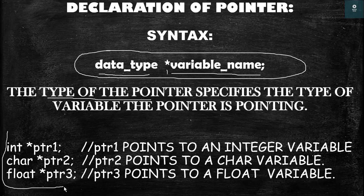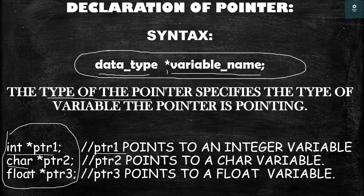We have three pointers here. The first one is integer star ptr1, which is an integer pointer — meaning that ptr1 will point to an integer variable, because the type is integer.